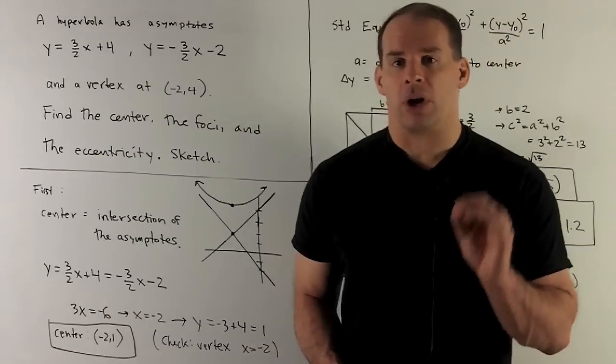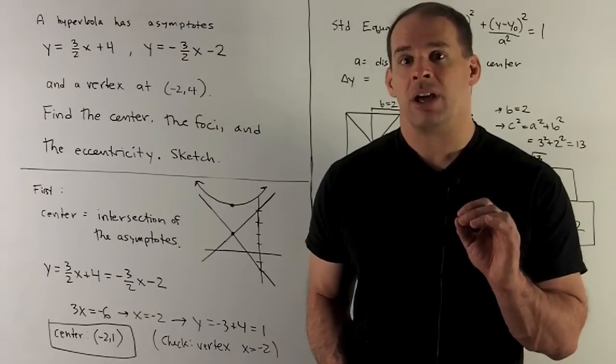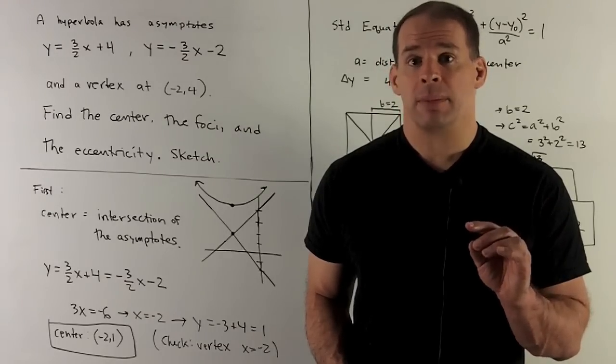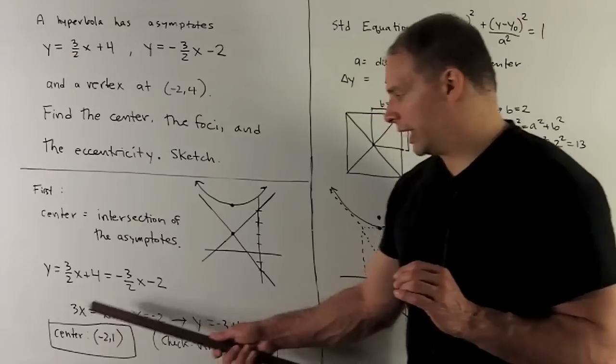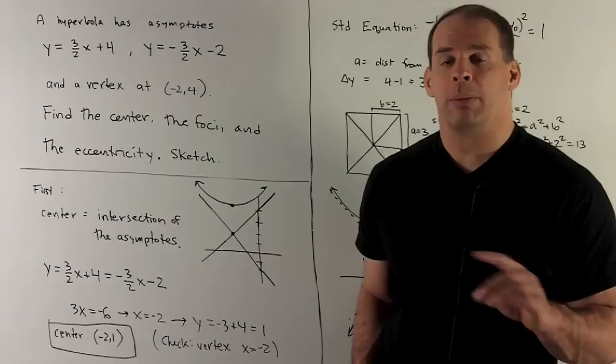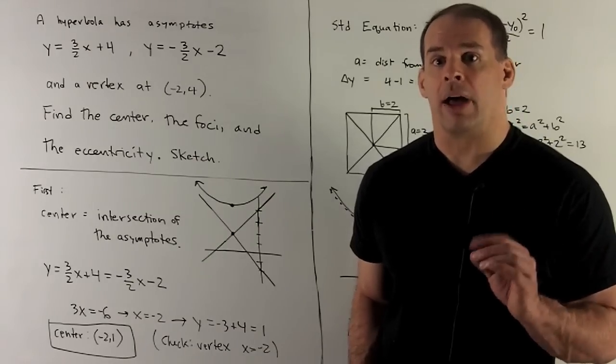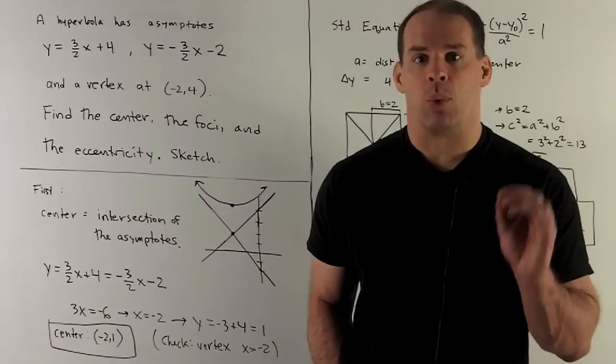On our list, we can get our center right away. That's going to be the intersection of our asymptotes. So I take the equations for both lines, I set them equal to each other. When I solve them for x, we're going to get x equal to minus 2. And then if I take that minus 2, put it back into either equation, we're going to get a 1 out. So our center is going to be minus 2 comma 1.